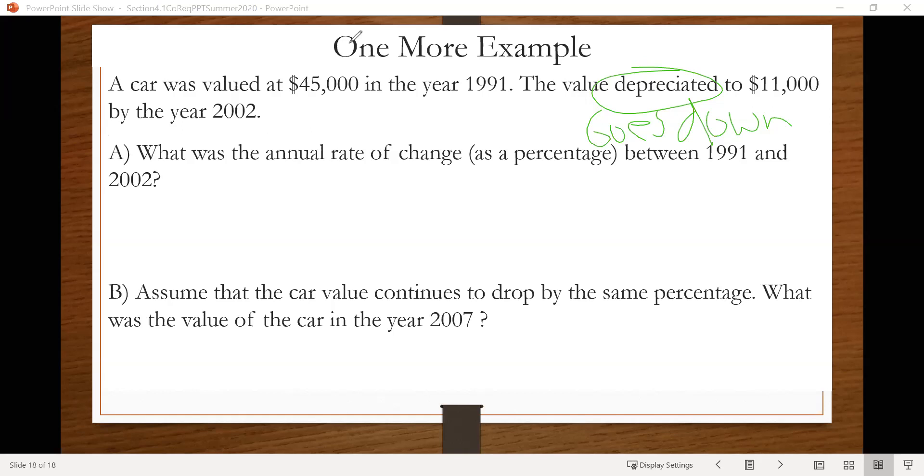So we're dealing with exponentials here, and we're not doing anything compounding. It doesn't say anything about compounding, so we don't need our compound interest formula here. So we're going to use one of our general exponential function formulas. Because we're looking for something as a percentage, that tells me we want to use the one that's F of X equals A times 1 plus R to the X.